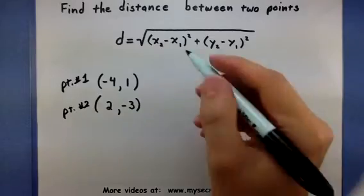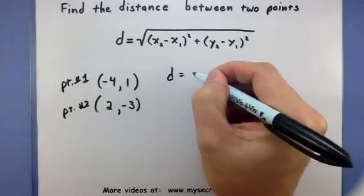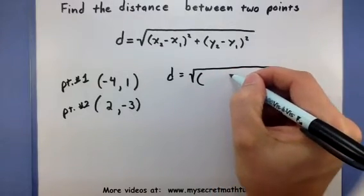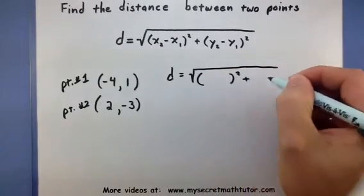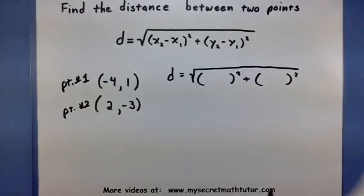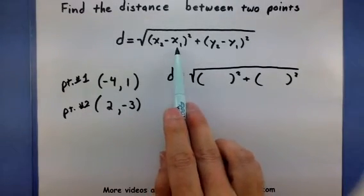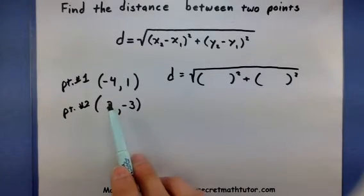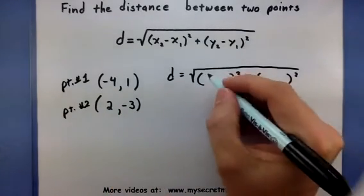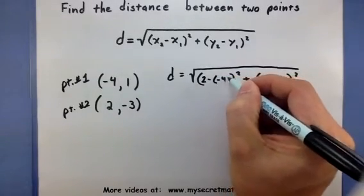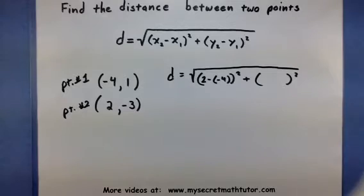The next part is I want to write down this formula and leave those x's and y's blank for now so that I can fill them in later. So it says take x2 minus x1. We'll take the second x coordinate and subtract the first x coordinate. So 2 minus a minus 4.